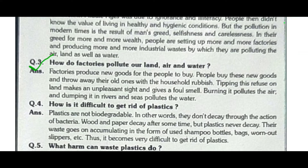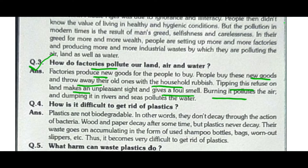The next question is: how do factories pollute our land, air, and water? Factories produce new goods for people to buy. People buy these new goods and throw away their old ones with household rubbish. Dumping this refuse on land makes an unsightly site and gives a foul smell. Burning it pollutes the air, and dumping it in rivers and seas pollutes the water.